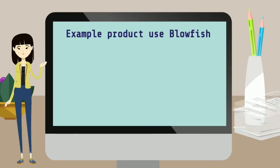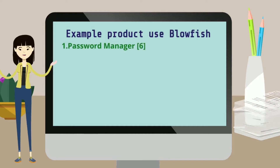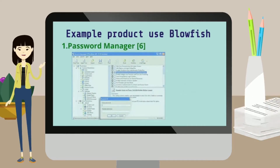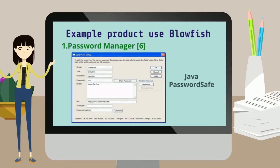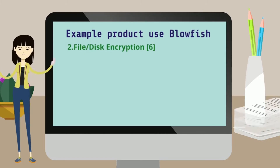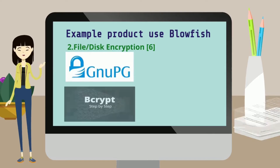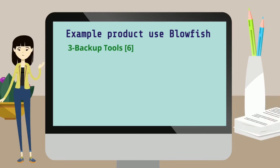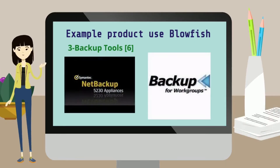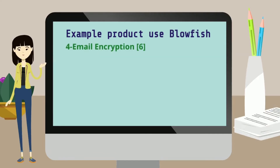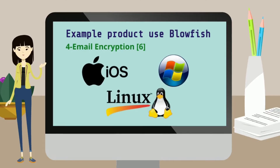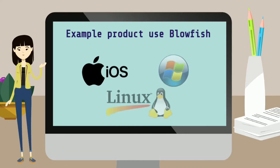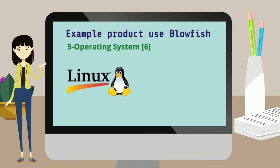Applications that use Blowfish include password management tools such as SSH Manager and Java Password Safe. File encryption tools include GnuPG, BigGrid, and CryptoForce. Backup tools include Simen Technic Backup and Backup for Workgroup. Email encryption on iOS, Linux, and Windows software also uses Blowfish, such as in secure mail applications. Operating system examples include Linux and OpenBSD.